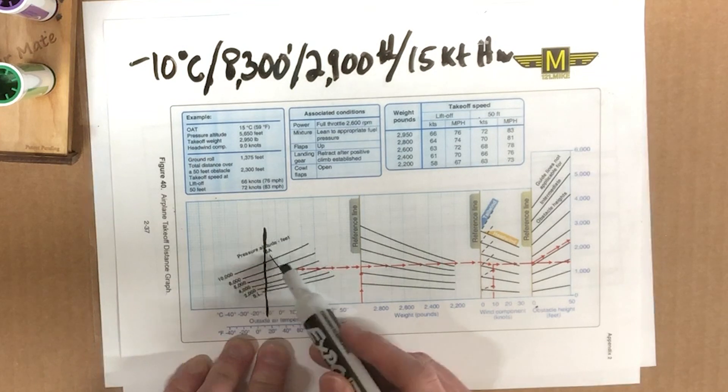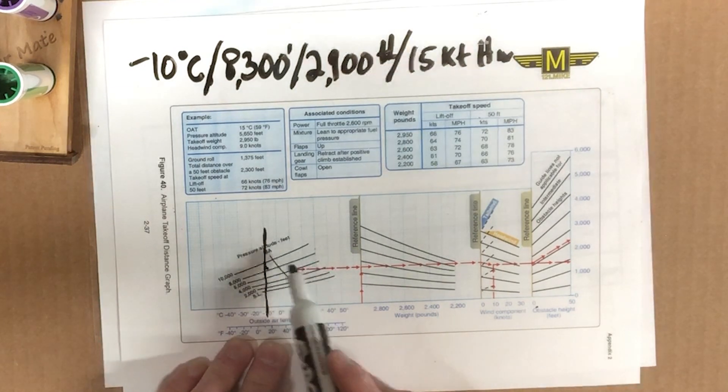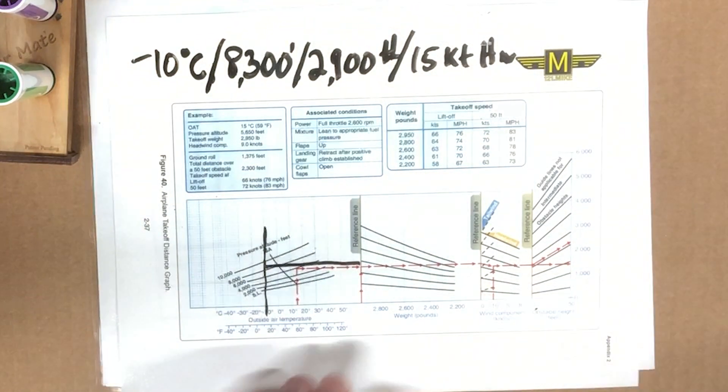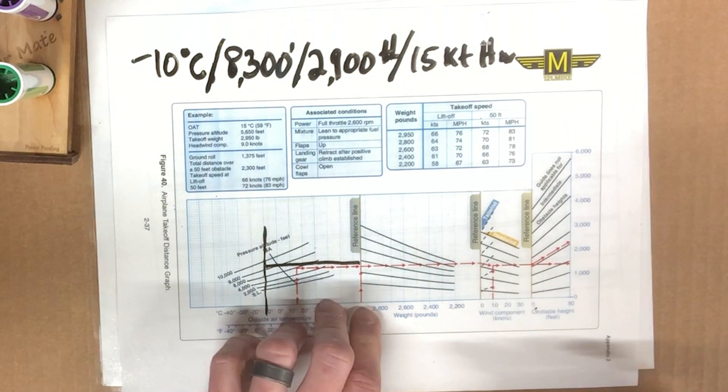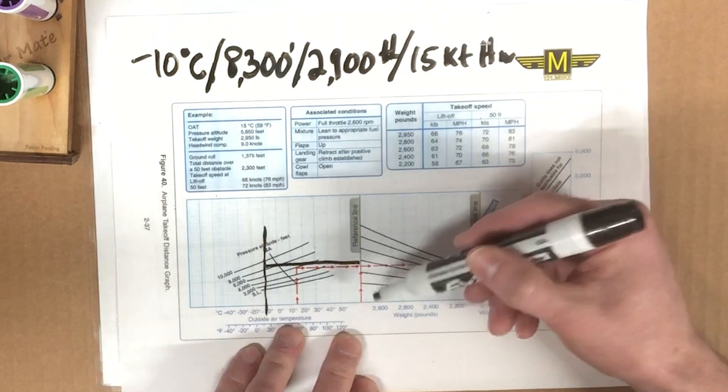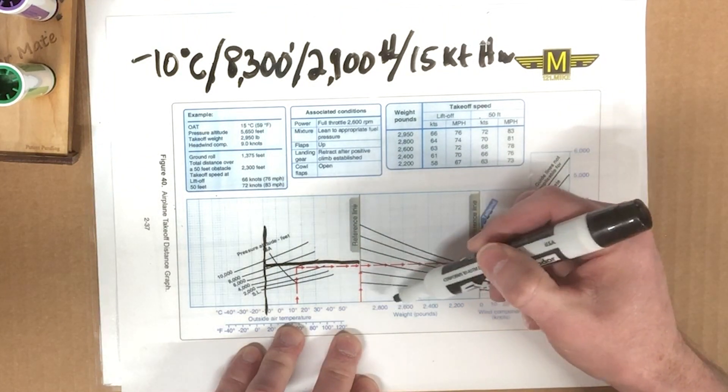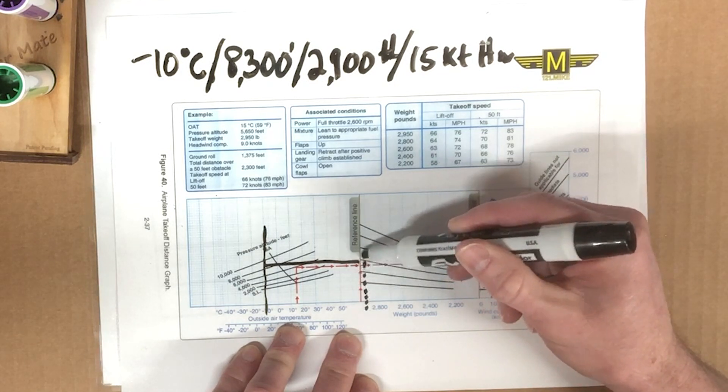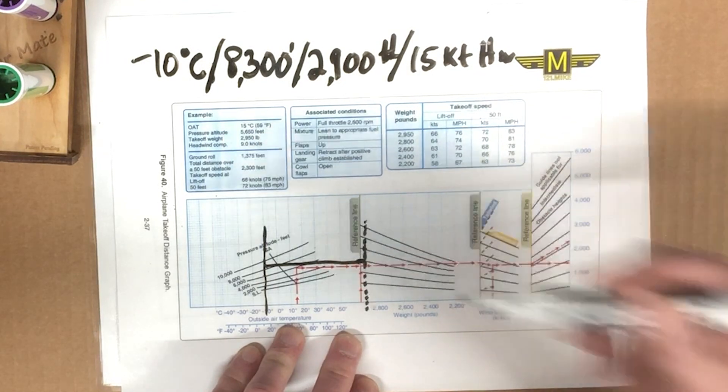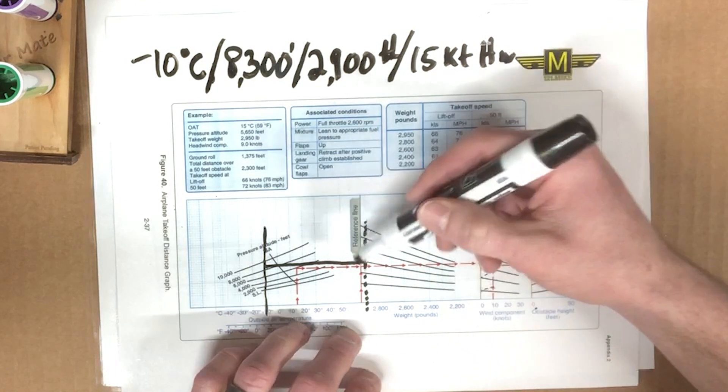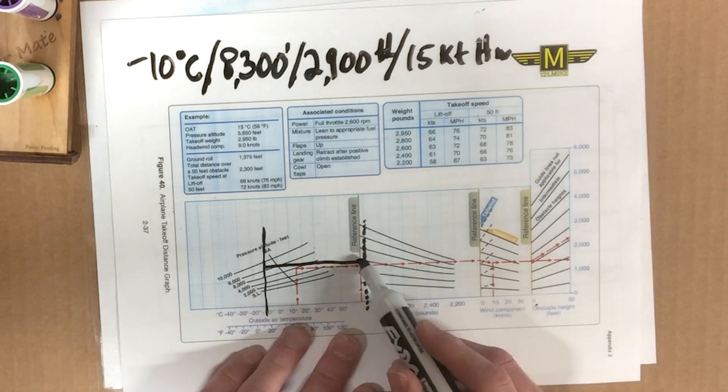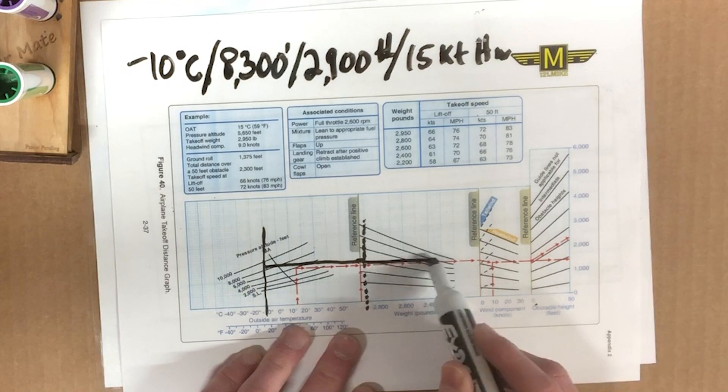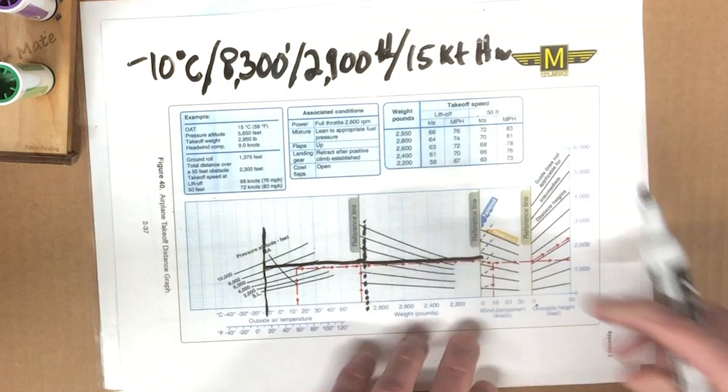So we're going to come across to our reference line there. Our weight, I said was 2,900 pounds. That puts us 28, 26. These are in 100-pound increments. So it's this line right there, this dark blue line. So we're going to come in until we hit that. We didn't really move much at all there. So we went down just a tad as we flew along these parallel black lines. Didn't go down much at all. So we're going to come out over here to our wind component.